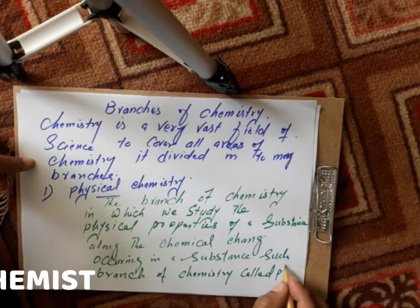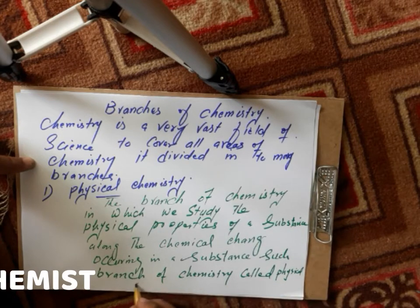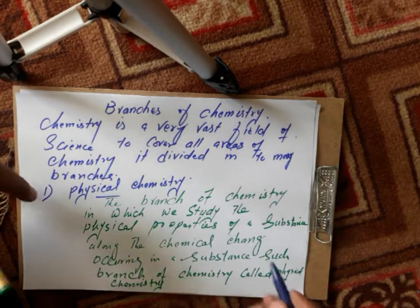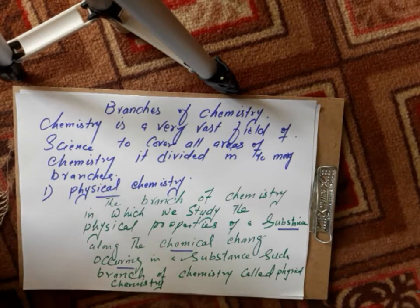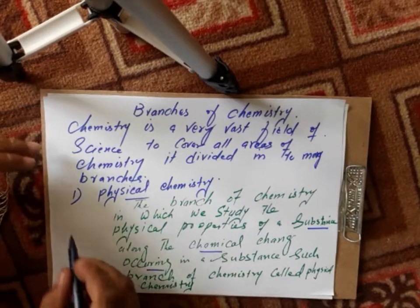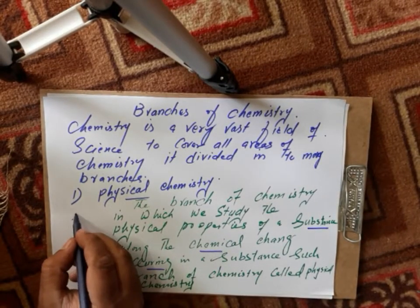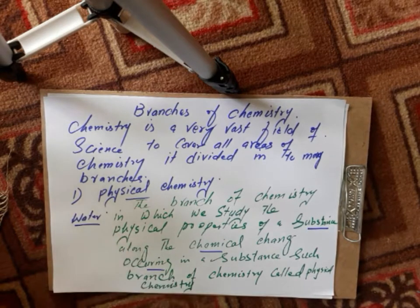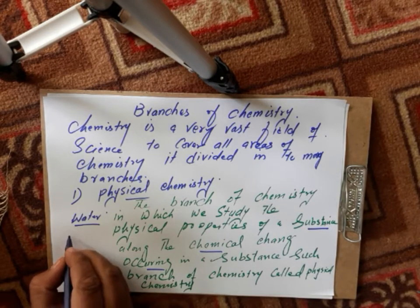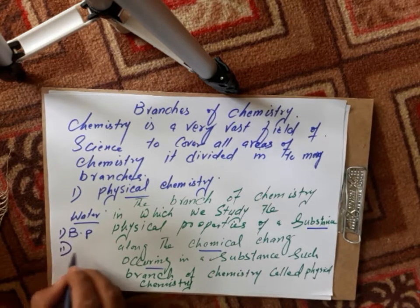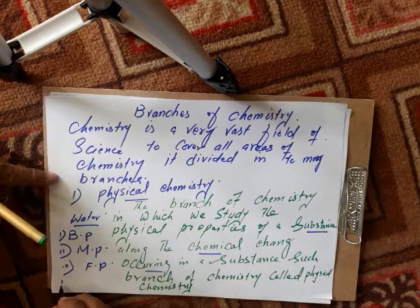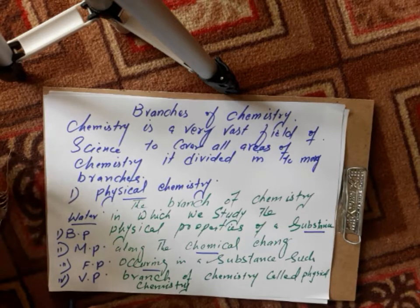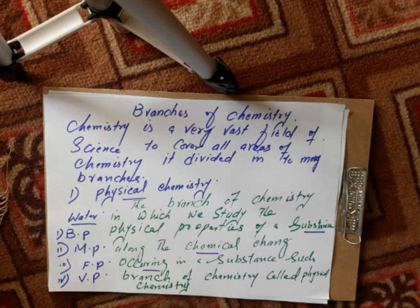Such a branch of chemistry is called physical chemistry. In physical chemistry, we study the physical properties of a substance. For example, water — its boiling point, melting point, and freezing point are examples of physical properties studied in physical chemistry.